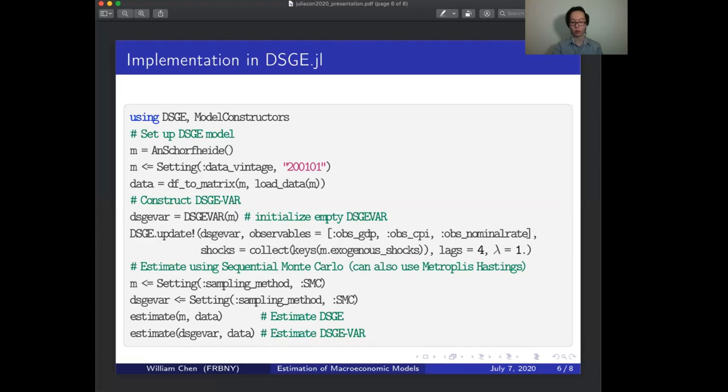Making estimation work was super simple as well. Due to multiple dispatch, we just needed to write a likelihood function specifically for the DSGE-VAR. All the machinery we have written for sequential Monte Carlo Metropolis Hastings for DSGE-VARs therefore worked right out of the box after doing that. As a result, estimating a DSGE-VAR versus a DSGE looks virtually identical, as the last two lines of the script shows.